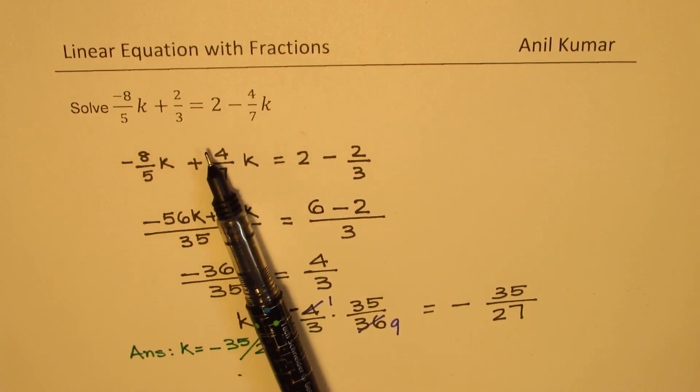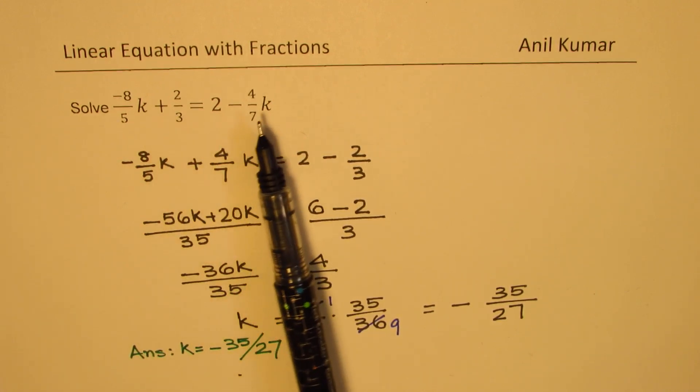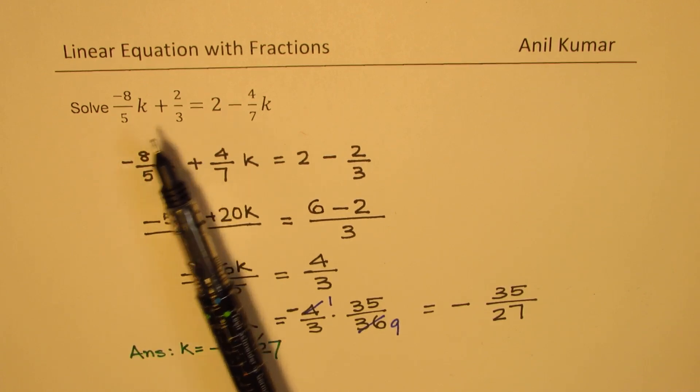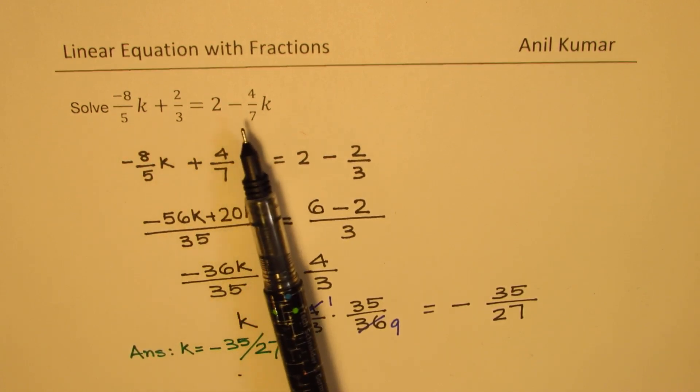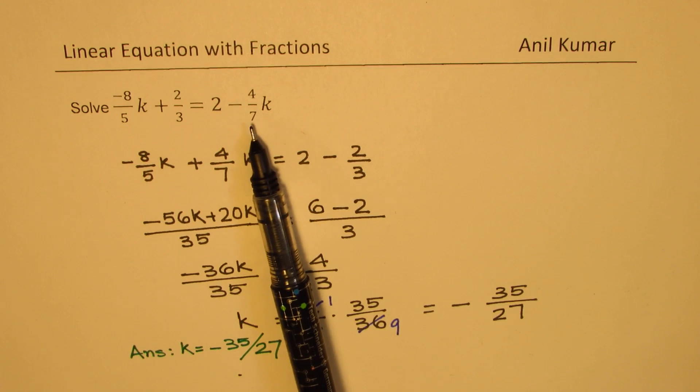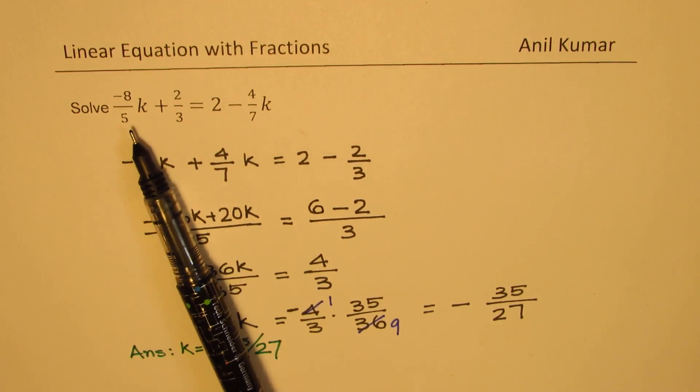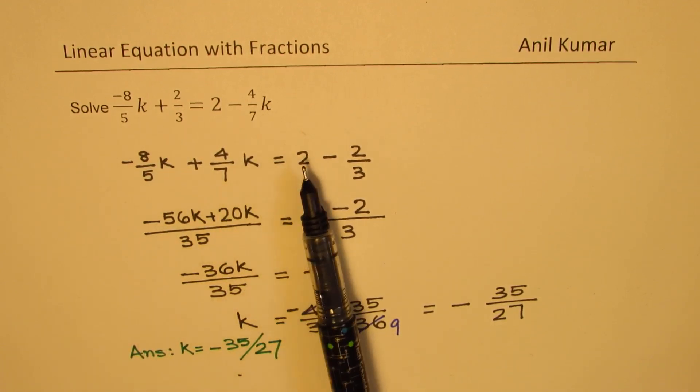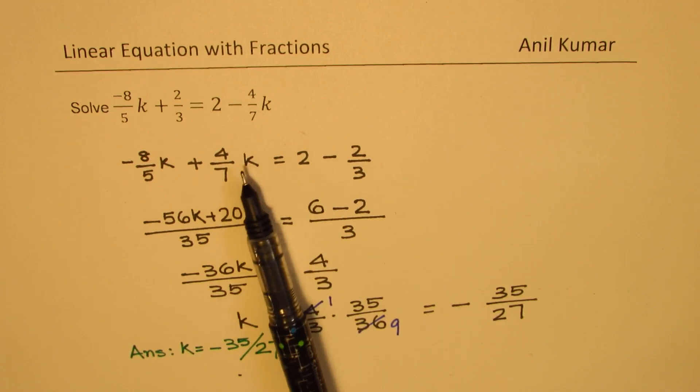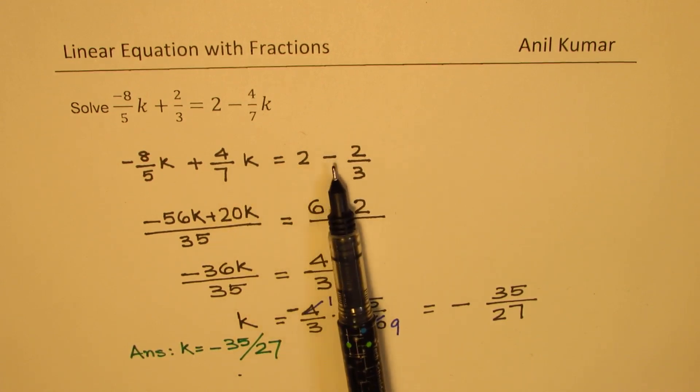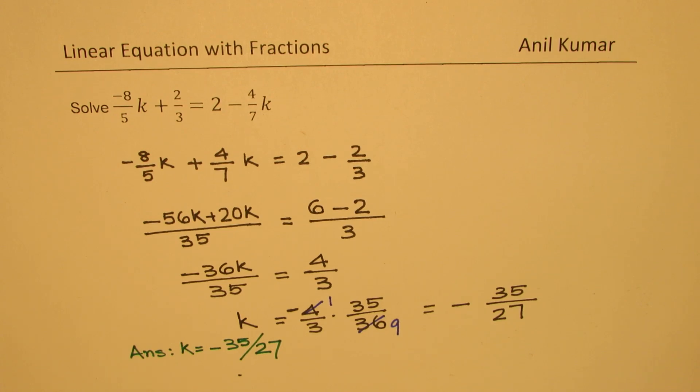So my suggestion is do not try them all together. In that case the common denominator will be 5 times 3 times 7 which is a big number, 21 times 5. Instead you could bring the variables together and the numbers together to solve. So that should help you. I hope that makes sense.